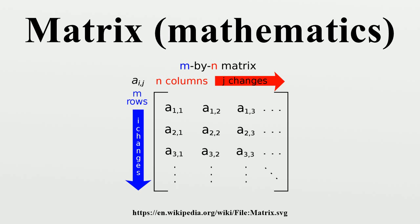The matrix A is said to represent the linear map f, and A is called the transformation matrix of f. For example, the 2 times 2 matrix can be viewed as the transform of the unit square into a parallelogram with vertices. The parallelogram pictured at the right is obtained by multiplying A with each of the column vectors in turn; these vectors define the vertices of the unit square. The following table shows a number of 2 by 2 matrices with the associated linear maps of R^2. The blue original is mapped to the green grid shapes, and the origin is marked with a black point.